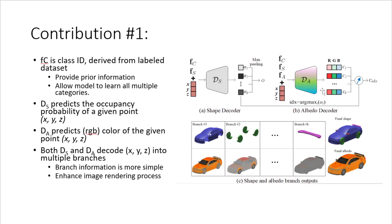The albedo decoder similarly uses class ID, shape ID, and an albedo ID (FA) extracted directly from the image. It transforms a point in 3D space into a color code, outputting multiple color codes C1 to CK and selecting the best one. A function then combines the shape occupancy probability and the color code into a final result.